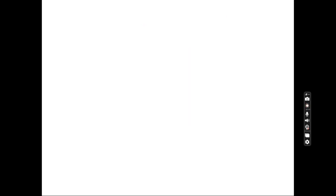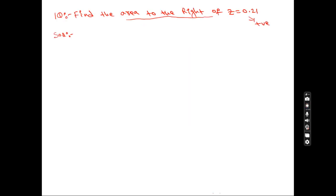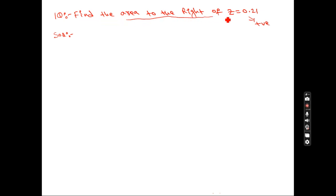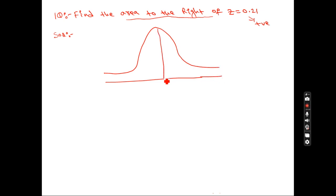Solving a normal distribution problem is about understanding the diagram. Once you understand the diagram, you can solve any problem. The first problem: find the area to the right of z equals 0.21. Draw a diagram — normal distribution is a bell-shaped curve. The z-value at center is zero, and 0.21 is a positive value, so it falls to the right of center.